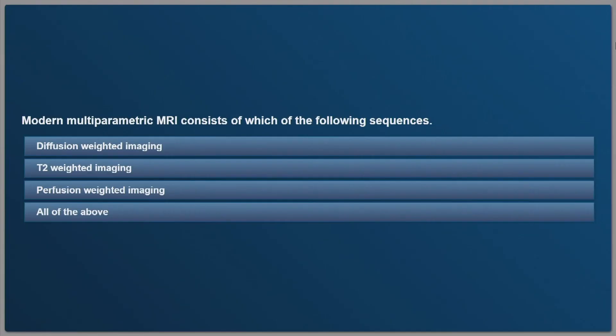First question: modern multiparametric MRI consists of which of the following sequences? Diffusion weighted imaging, T2 weighted imaging, perfusion weighted imaging, or all of the above?